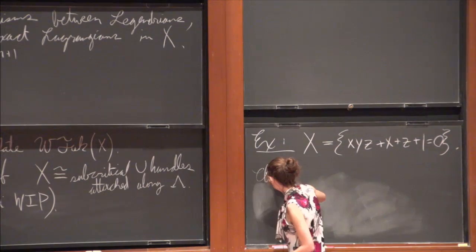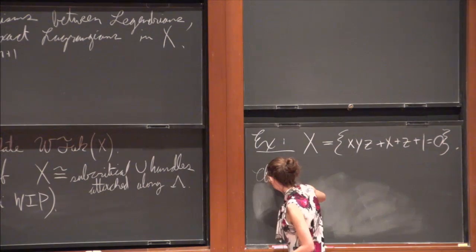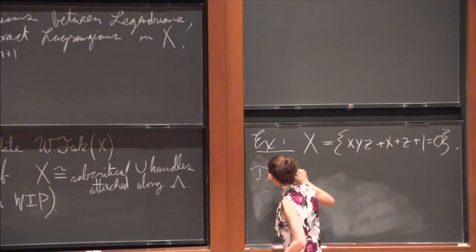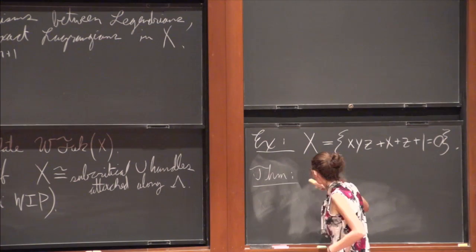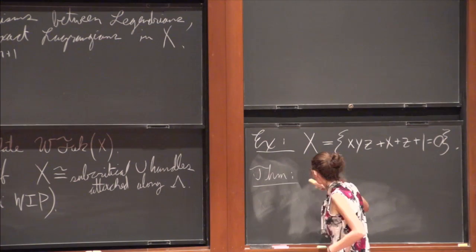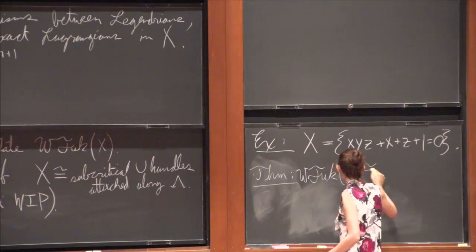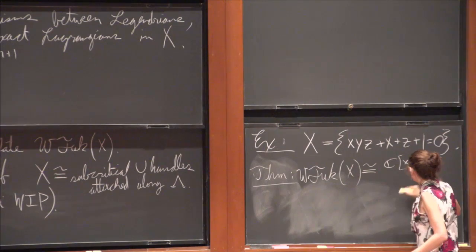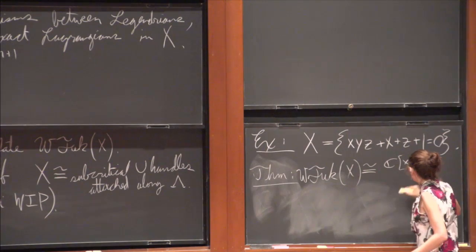So then the claim, I guess I'll write it as a theorem though. So it's kind of a bunch of different pieces and only like a small fraction of this is due to us. But the kind of theorem is that the wrapped Fukaya category of X is isomorphic to C adjoin XYZ modulo this relation.